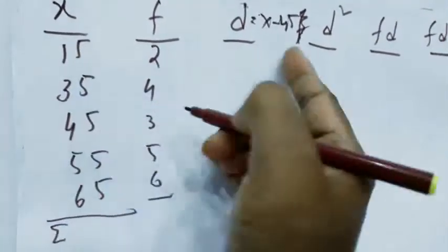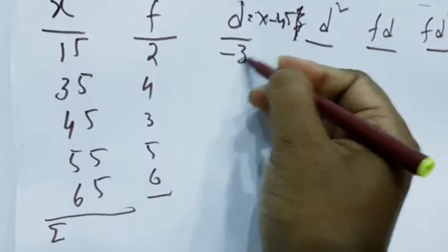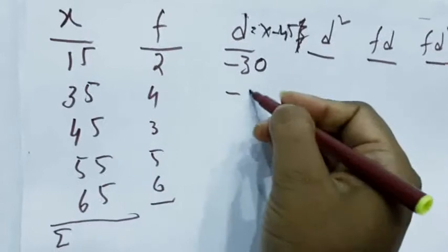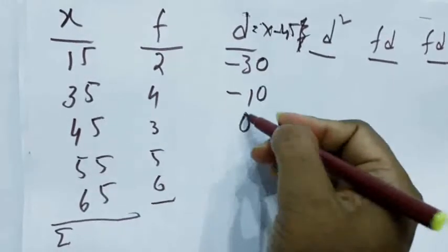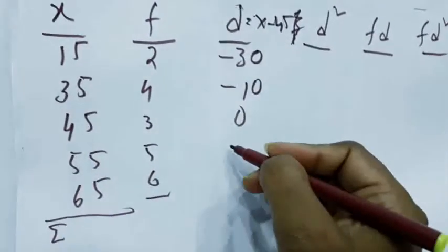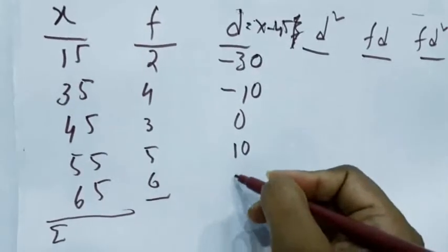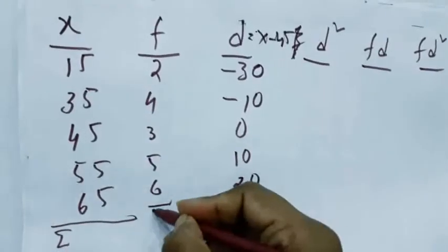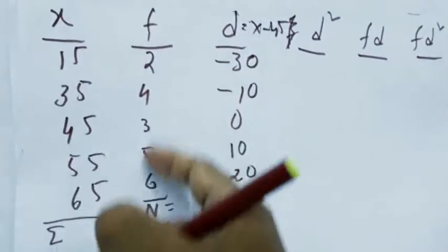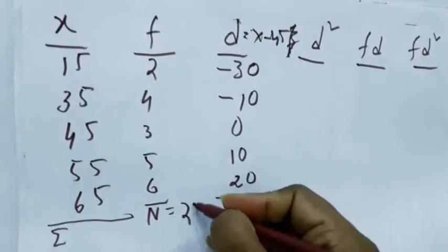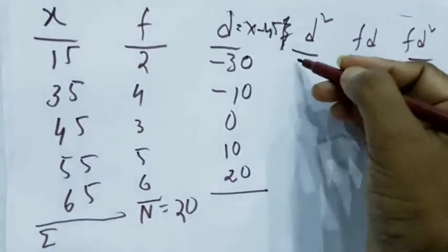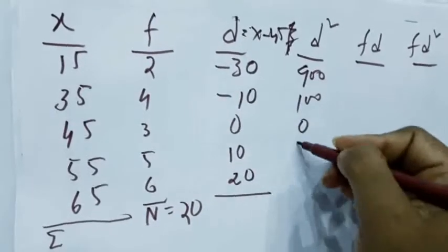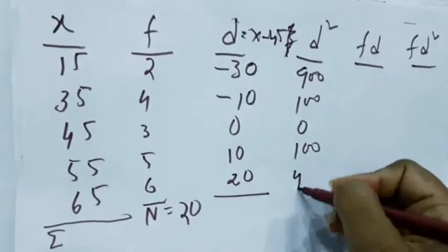So 15 minus 45 is minus 30. 35 minus 45 is minus 10. 45 minus 45 is 0. 55 minus 45 is 10. 65 minus 45 is 20. Sum of N is 20. Now d square: 30 square is 900, then 100, then 0, then 100, then 400.